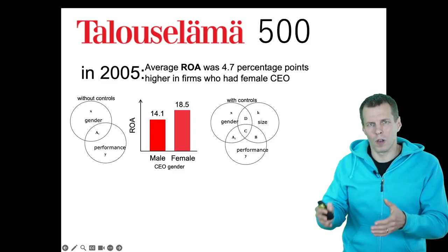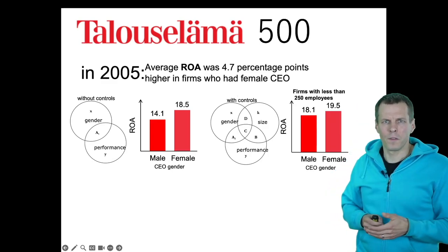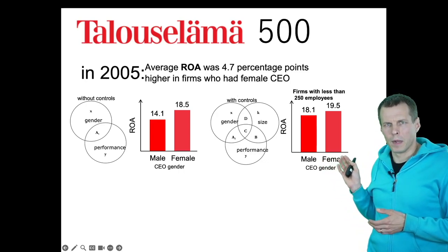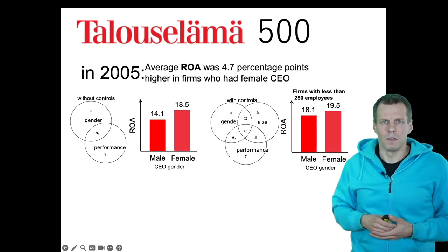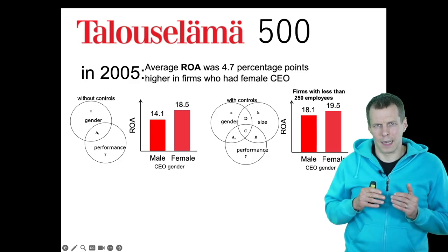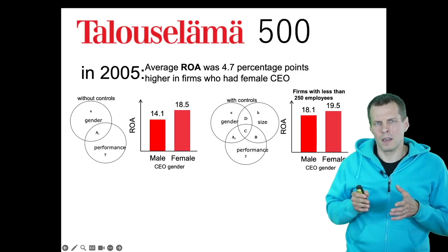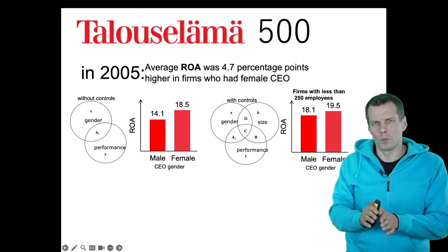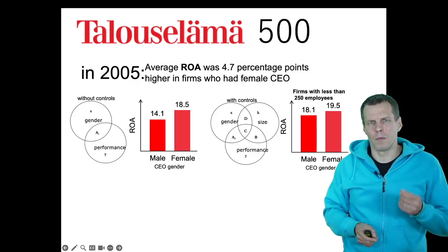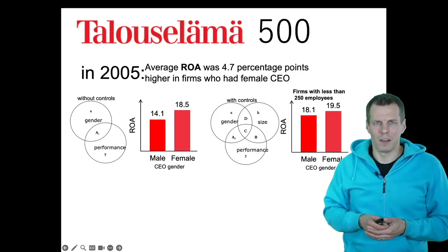For firms with fewer than 250 employees, male-led companies might show 18.1% and women-led companies 19.5% — these are illustrative numbers. The idea is to make the two groups more comparable by matching on one dimension. This sampling strategy is easy to understand: just restrict the sample to make the groups more comparable.